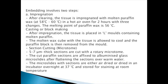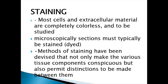Embedding involves two steps. First, impregnation: after clearing, the tissue is impregnated with molten paraffin at about 58 degrees Celsius in an oven for two hours. Second, the tissue is placed in molds containing molten paraffin. After all these steps, you can stain your tissue and view it under the microscope.